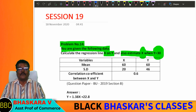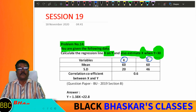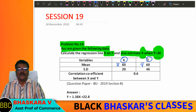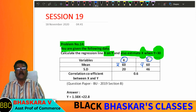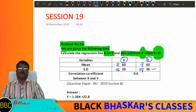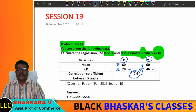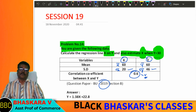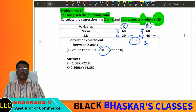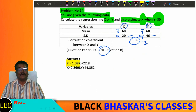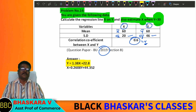The variables are x and y. Arithmetic mean x-bar, y-bar, and r are given. Standard deviation of x and y are also given. Standard deviation of y is 40, and the correlation coefficient r is 0.6. So the regression equation is y equals 1.38x plus 22.8.